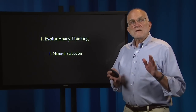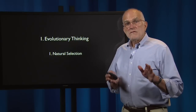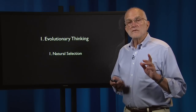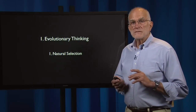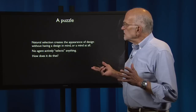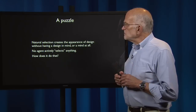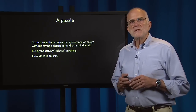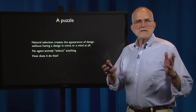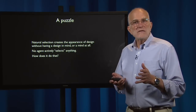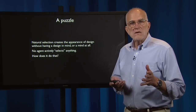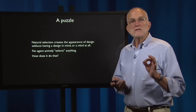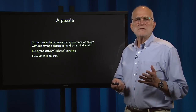We are going to look at five key concepts in evolutionary thinking, the first of which is natural selection. Natural selection presents us with a puzzle because it creates the appearance of design without having a design in mind, or even having a mind at all. There is no agent that's actively selecting anything. How does it do that?